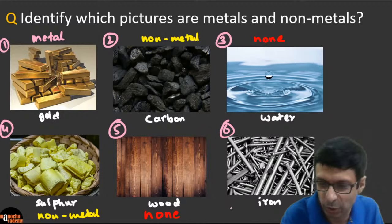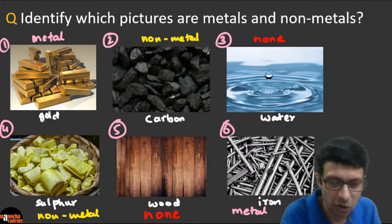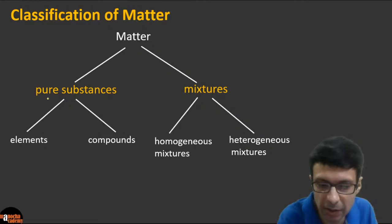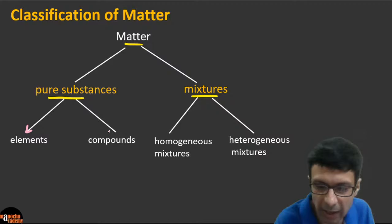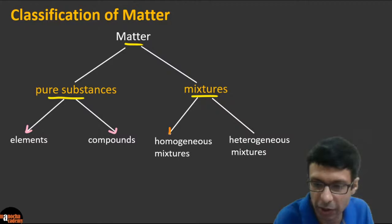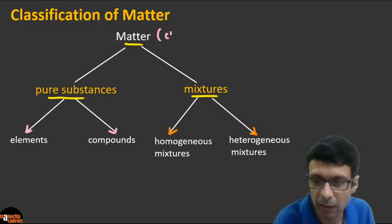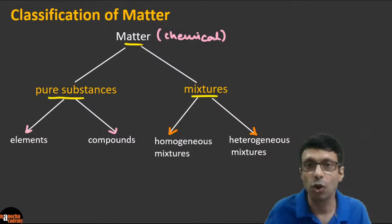Now let's understand why water and wood are 'none of these.' Matter can be classified into pure substances and mixtures. Pure substances can be divided into elements and compounds, and mixtures can be divided into homogeneous and heterogeneous mixtures. This classification is based on chemical properties.